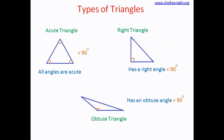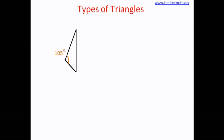These are the three types based on the angles a triangle has. Now let's solve some examples. Look at this triangle — it is an obtuse triangle because it has one obtuse angle of 105 degrees. The next question: a triangle has three sides of 3.5 cm, 2.5 cm, and 3.2 cm. All three sides are of different length, so this is a scalene triangle.